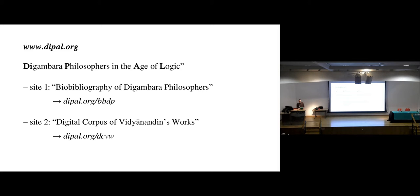The title reflects an influential periodization of K.K. Dixit, who in 1971 coined the phrase 'age of logic' for the literary epoch beginning with the Tattvartha Sutra and ending with Yashovijaya. What Dixit had in mind was the era of Jain Sanskrit literature on doctrine, ontology, epistemology, logic, and emancipation.